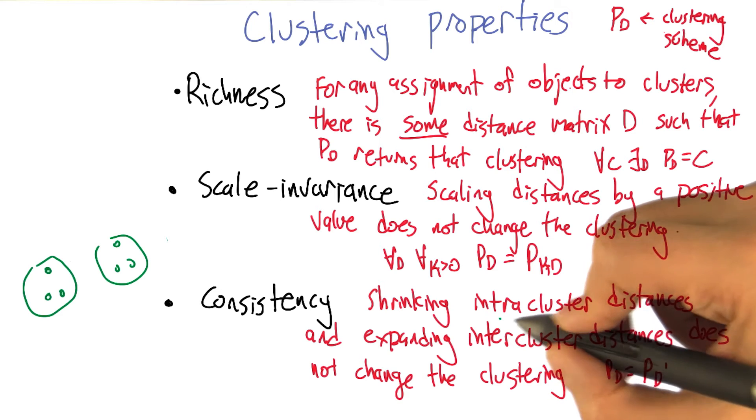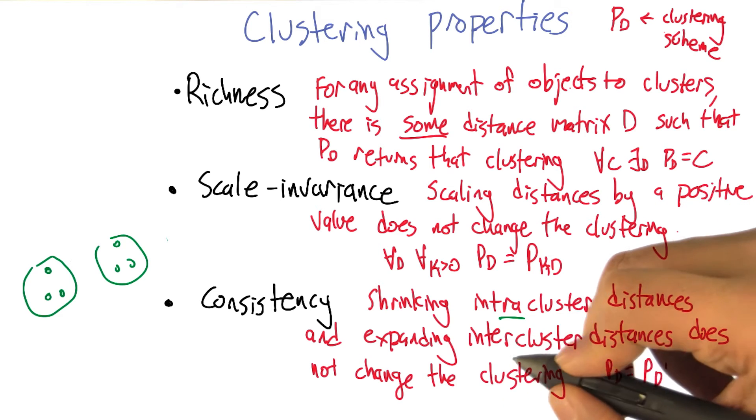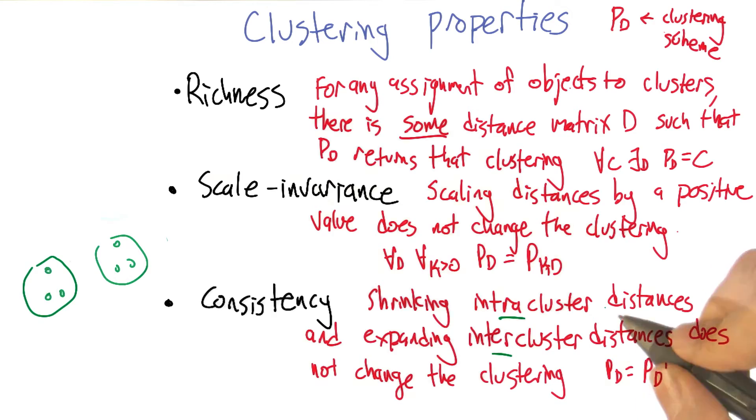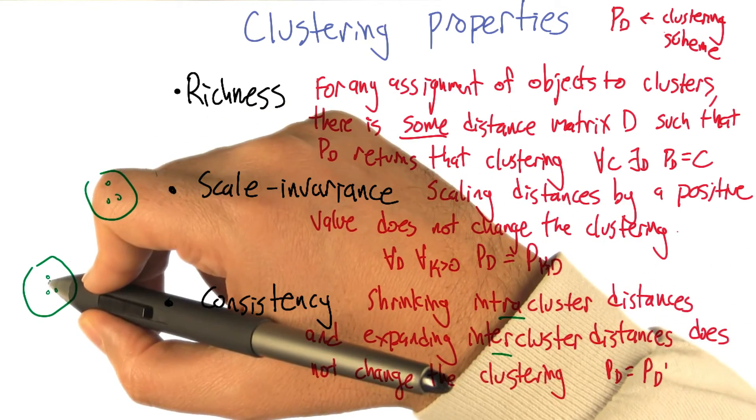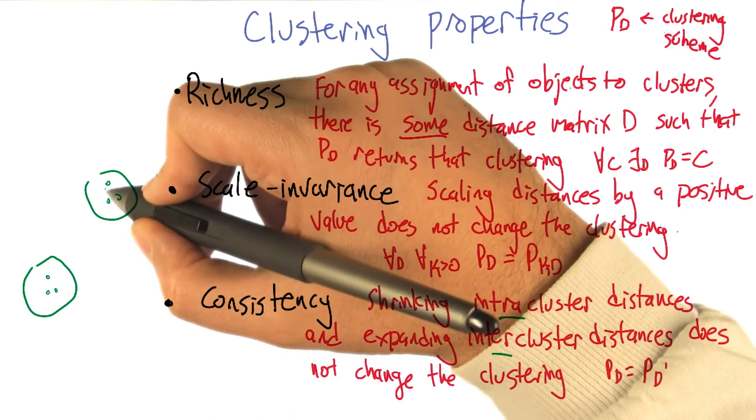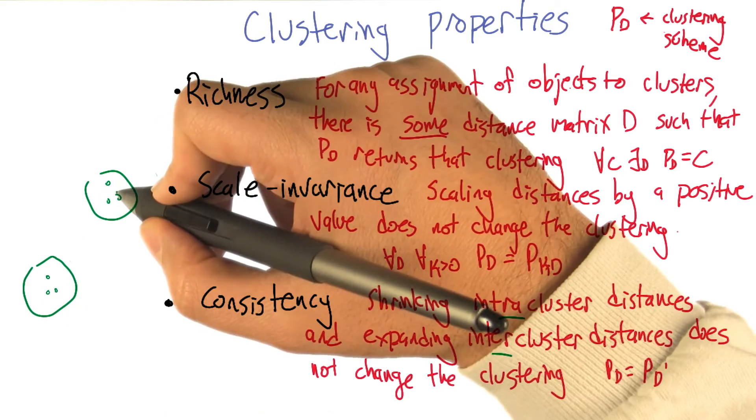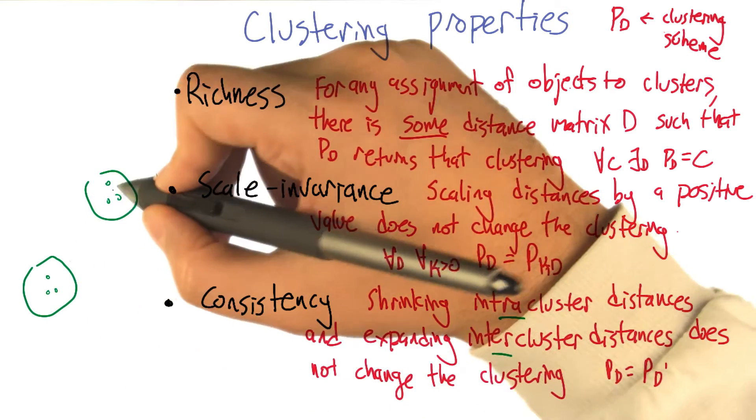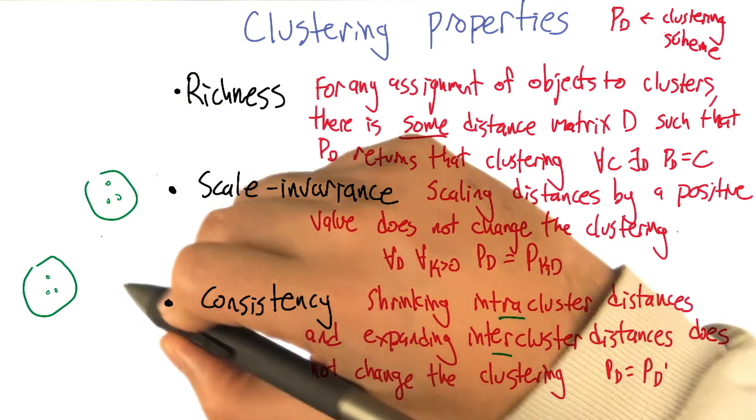Then shrinking the intra-cluster distances and expanding the inter-cluster distances does not change the clustering. Let me show you that. All right, and now I've edited this so that within the clusters, the points have gotten closer together, more so in this one than the other. Or not changing them at all, but in this particular case I shrunk this one a lot, I shrunk this one a little,